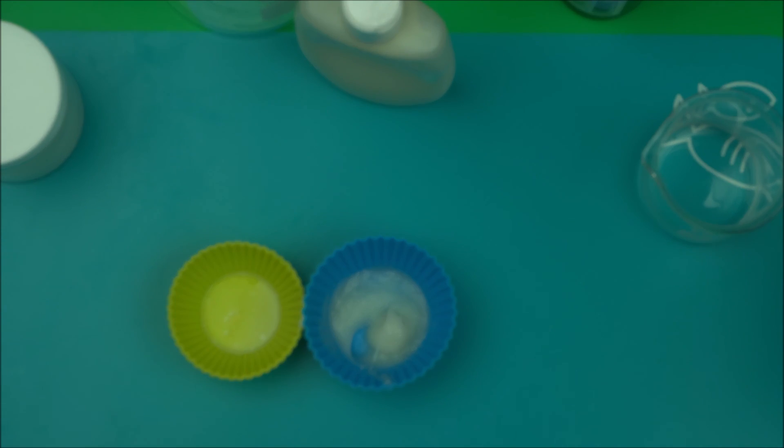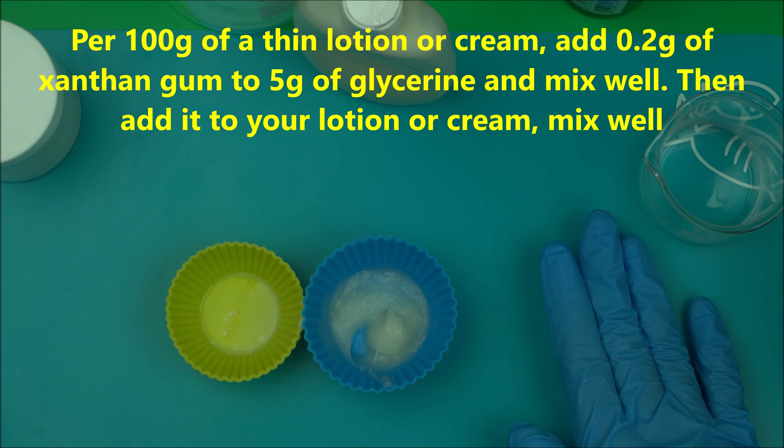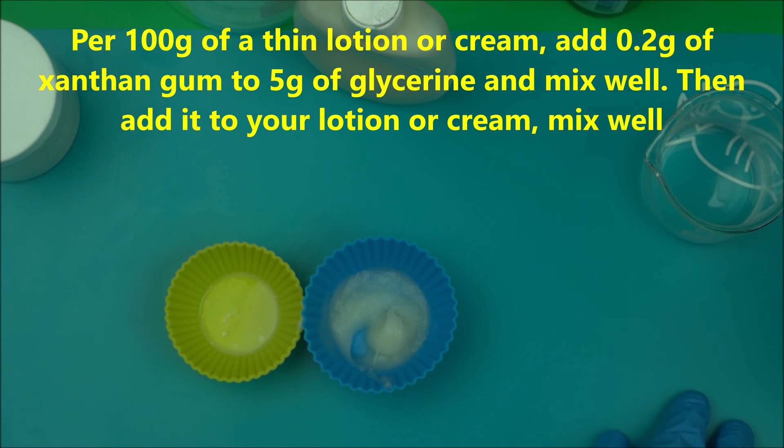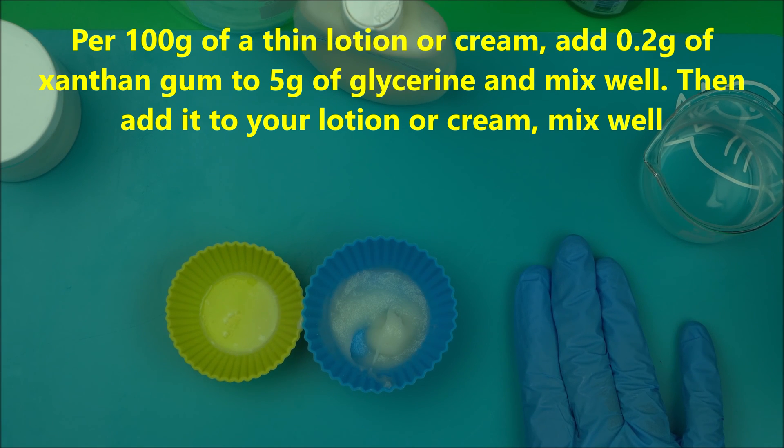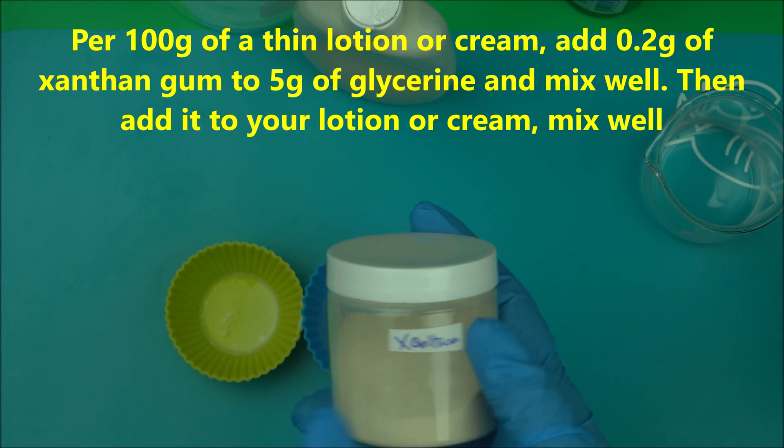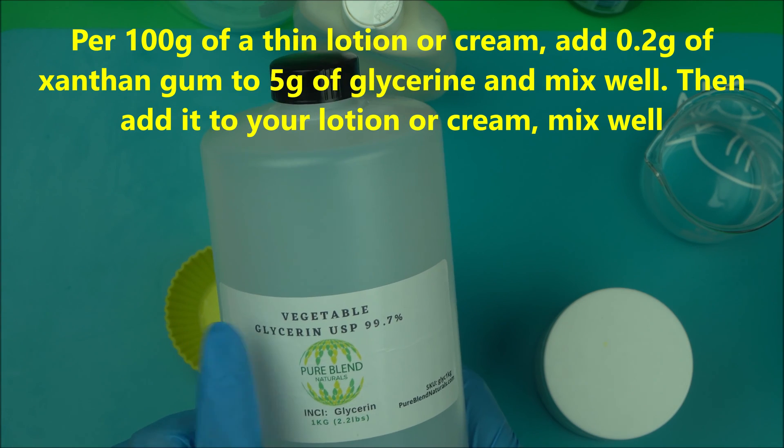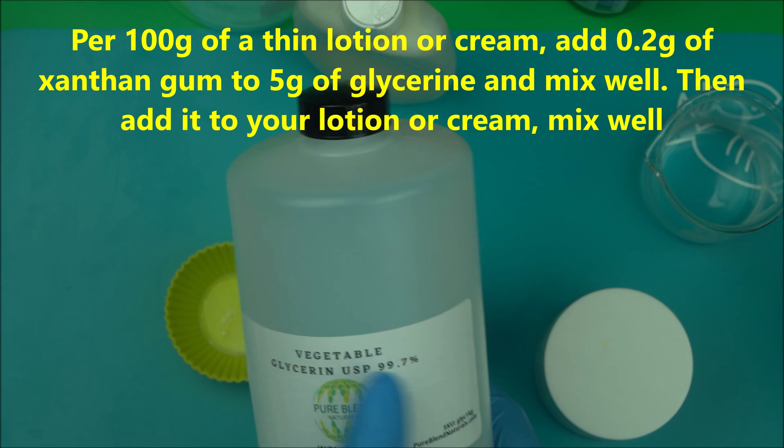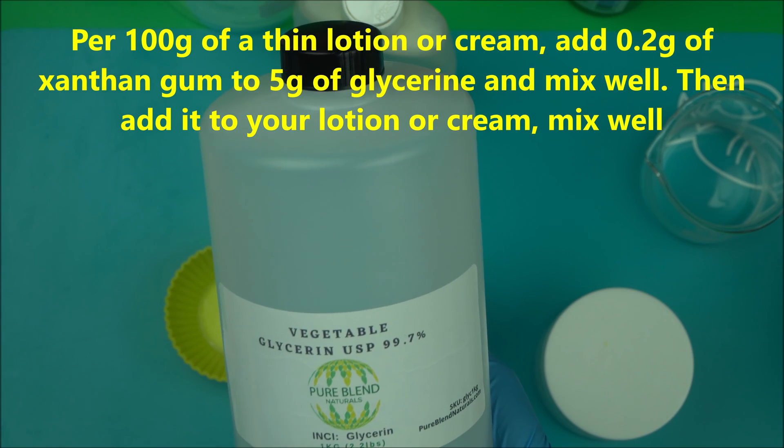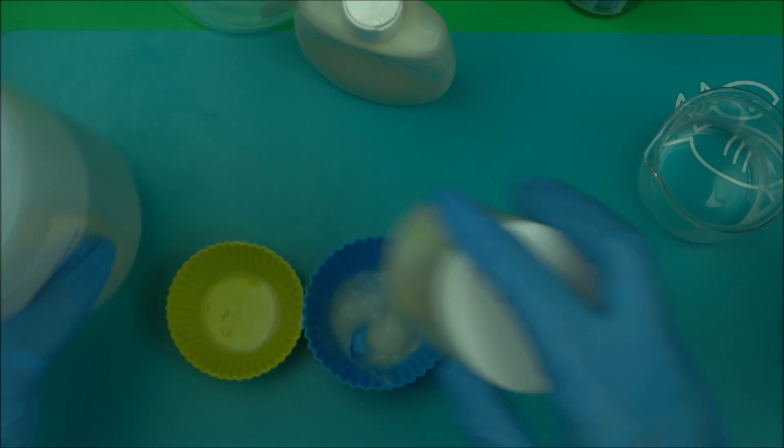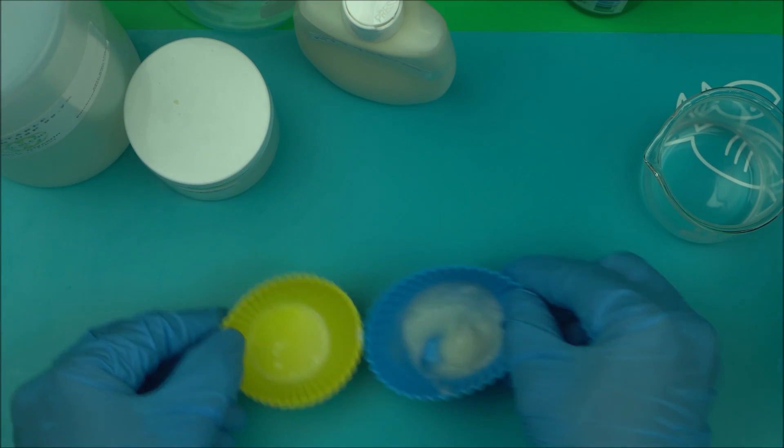For example, you are making 100 grams of lotion that's running - measure 100 grams of lotion, measure 5 grams of glycerin and add it to 0.2 grams of xanthan gum. That's 0.2% of xanthan gum, 5% of glycerin. Make sure you use glycerin USP 99.7 which is available at pureblendnaturals.com. Mix that together and add to your runny lotion.